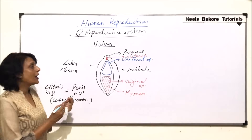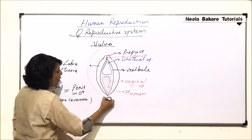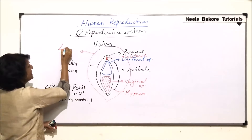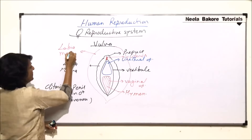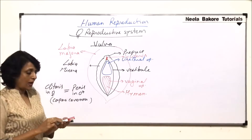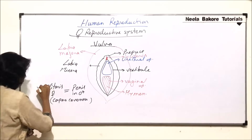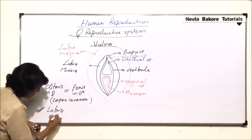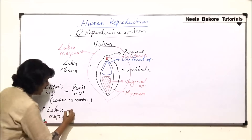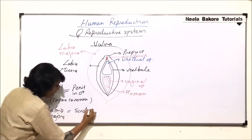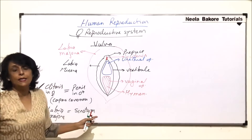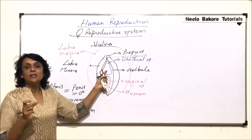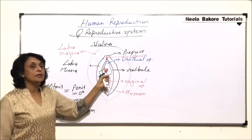Outside the labia minora there is one more fold of skin which is bigger, known as the labia majora. The labia majora is considered homologous to the scrotum or scrotal sacs in males. So these are two homologous structures: clitoris homologous to penis, and labia majora homologous to scrotum.